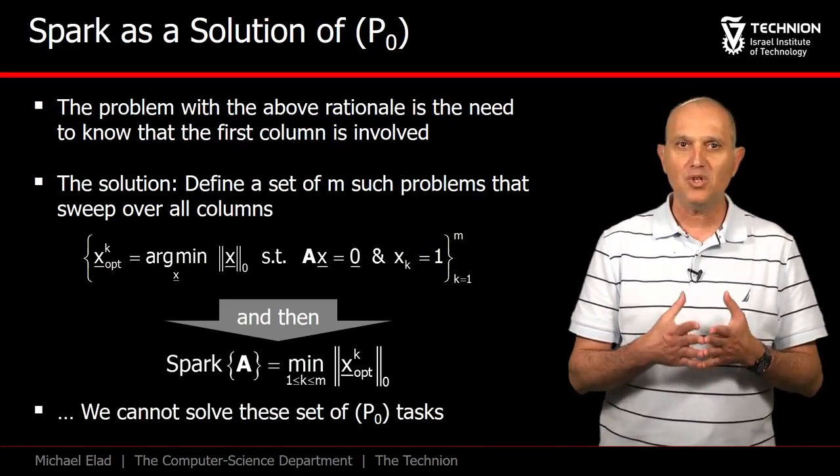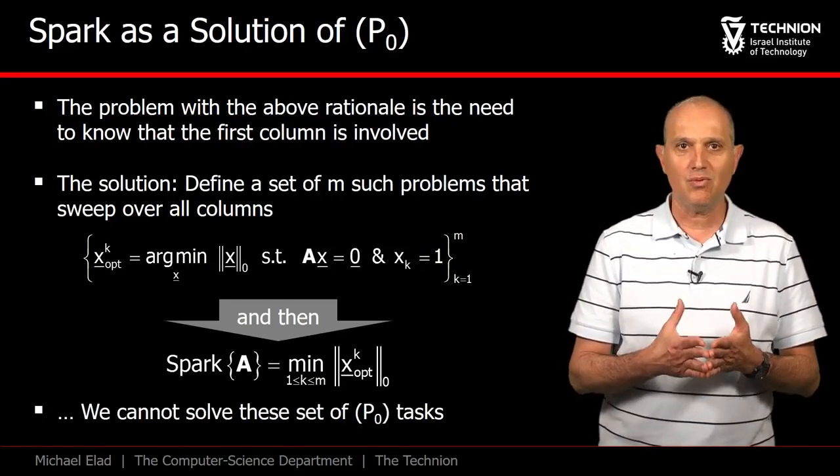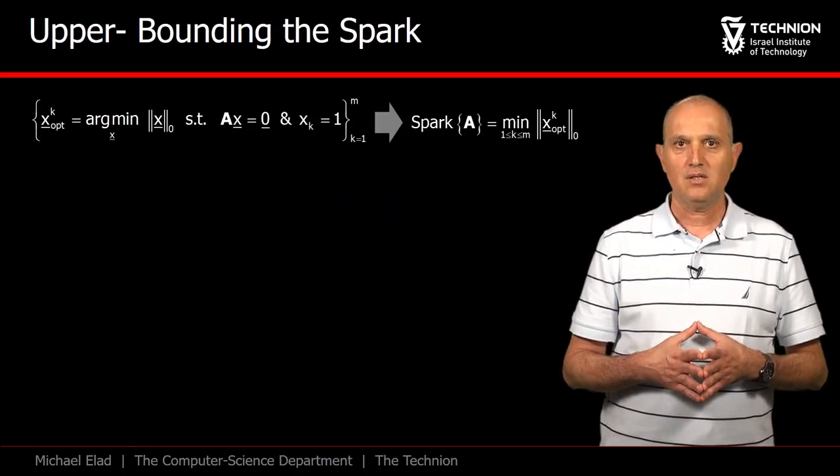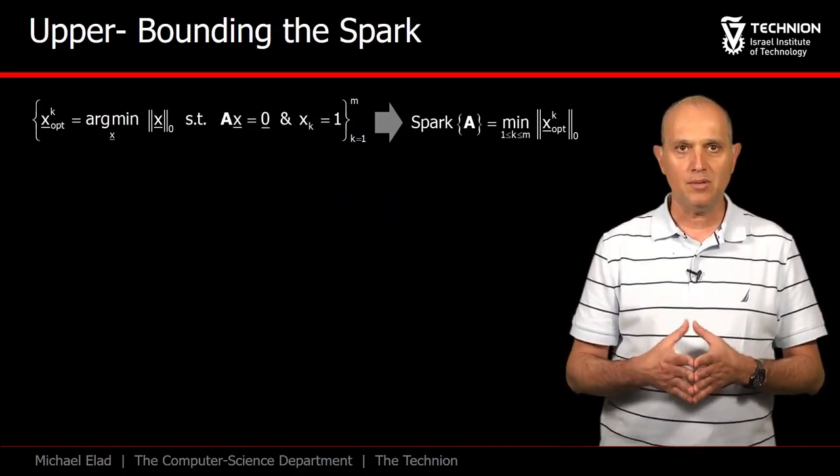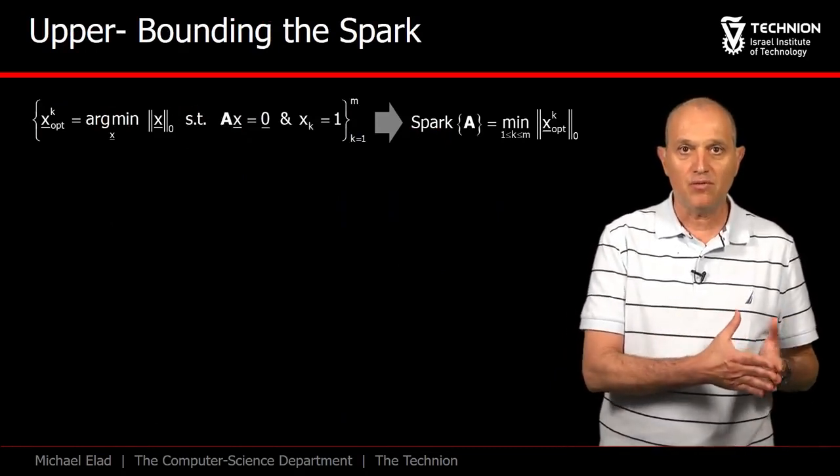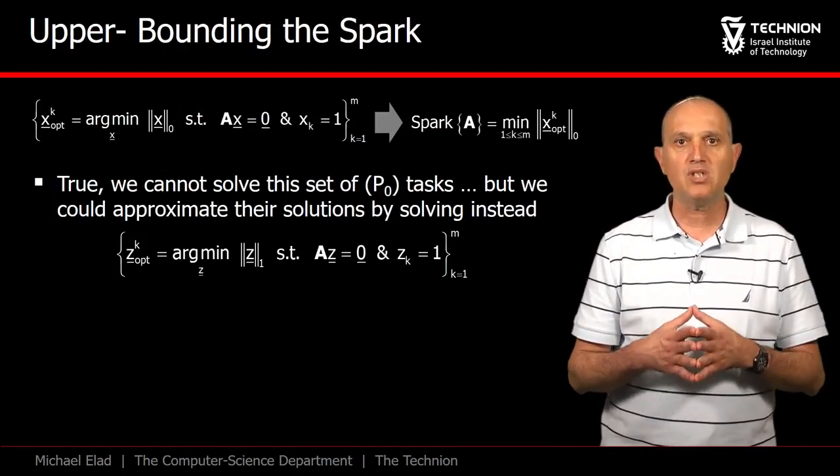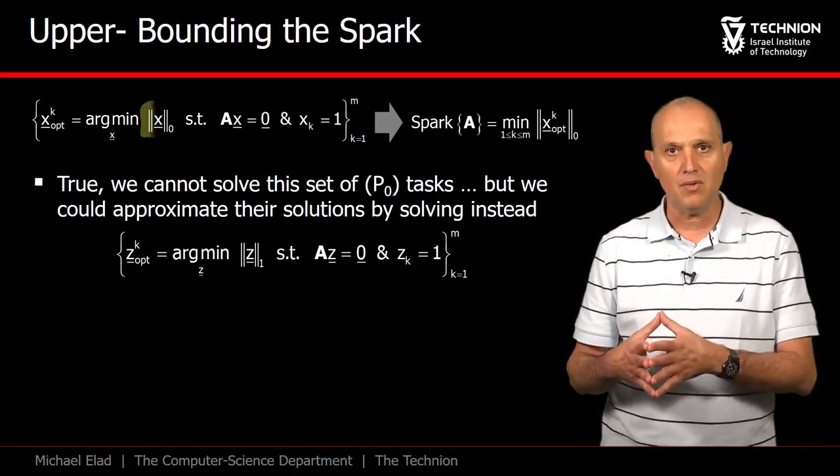However, we cannot solve these P0 problems, so what can we do? Starting from the m P0 problems, which lead to the perfect discovery of the spark, we move to an approximation where we replace the L0 norm by an L1.